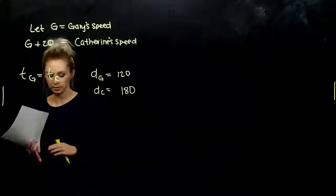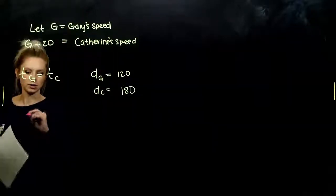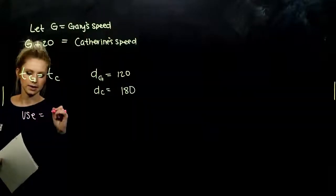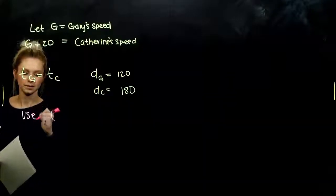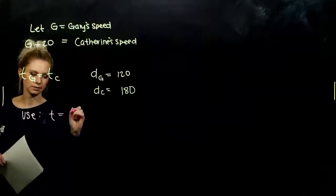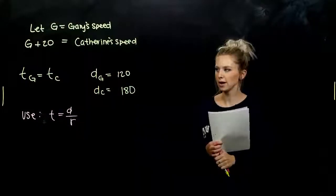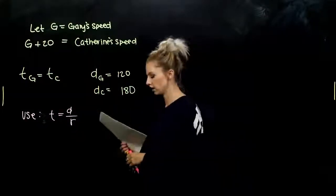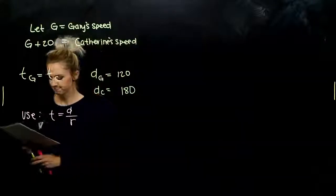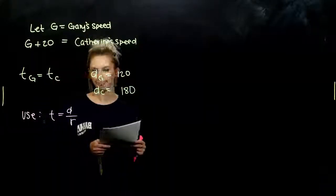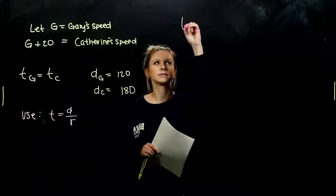So which version of that dirt formula do we want to stick with? I should use time as what? Distance divided by rate. Since I have info about the distance and the rate, and I know the times are equal to each other. So let's go ahead and solve.